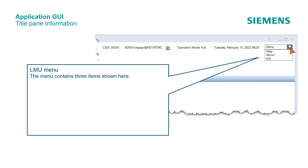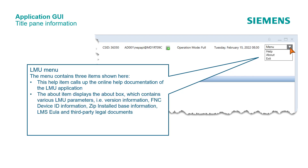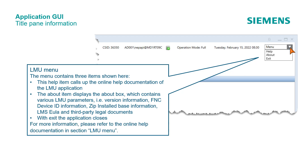The menu contains three items. The Help item calls up the online help documentation of the LMU application. The About item displays the about box, which contains various LMU parameters: specifically version information, FNC device ID information, zip installed base information, LMS EULA, and third-party legal documents. With Exit, the application closes. For more information, please refer to the online help documentation in section LMU menu.